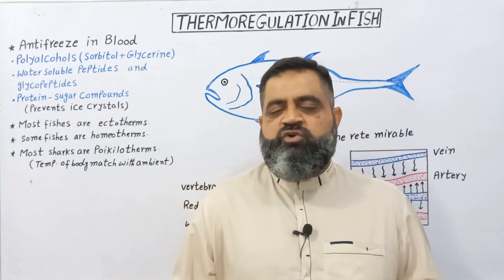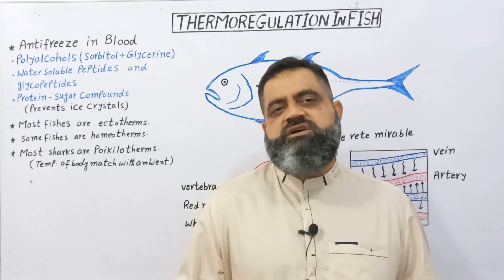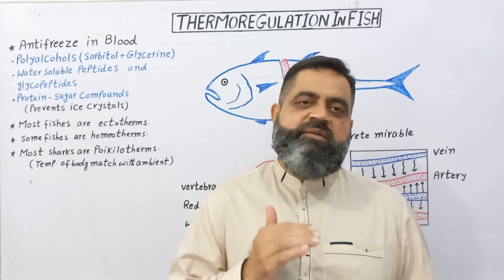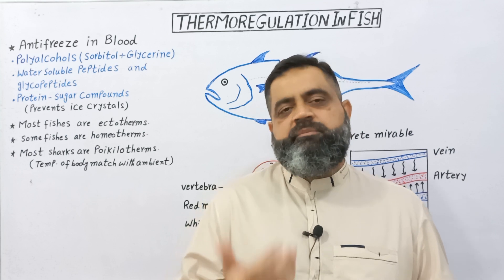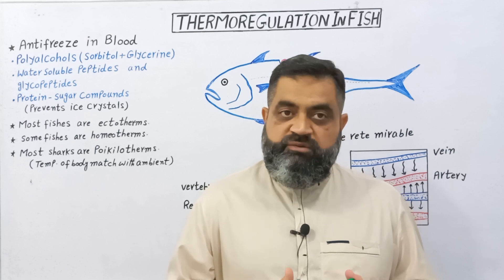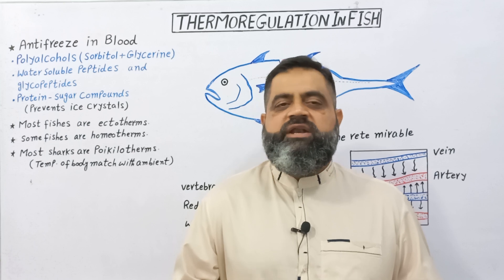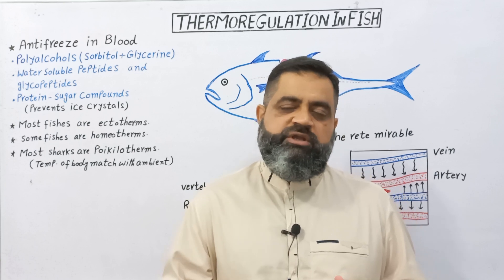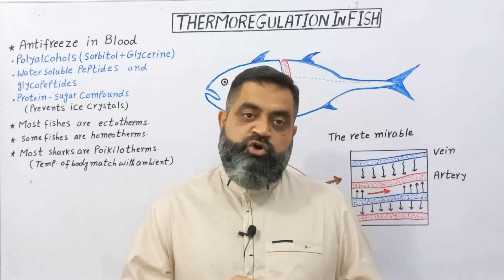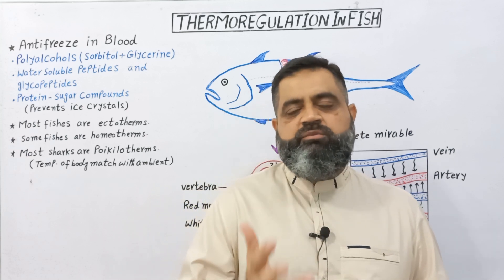Fish usually live in water, and different waters have different temperatures. Usually, fishes are ectothermic, as they get their heat from their ambient water temperature. And some fishes are homeothermic — they can maintain their internal body temperature. And some are cold-blooded or poikilothermic; they cannot generate their own body heat. Rather, they maintain their body temperature according to the ambient temperature.